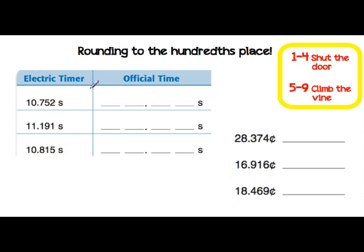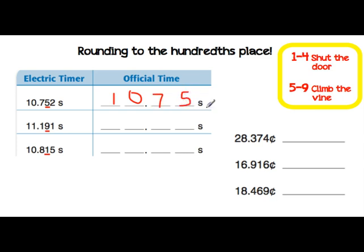Here we have some times in seconds, and it wants us to round to the hundredths place. Just like we did in the tenths place, we're going to underline the hundredths place, because that's what we want to round to. Looking at the number to the right of the hundredths place, we have a 2. It is less than 5, so it fits in the 1-4 rule — we're going to shut the door. So this is going to look like 10 and 75 hundredths of a second.